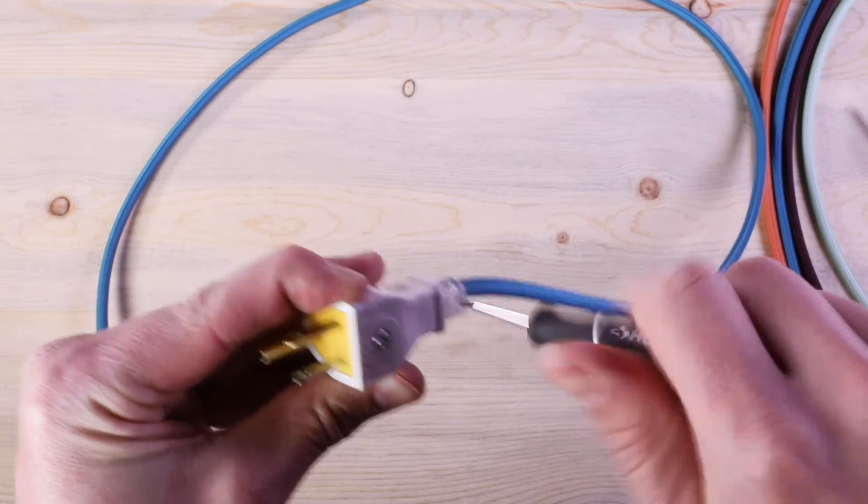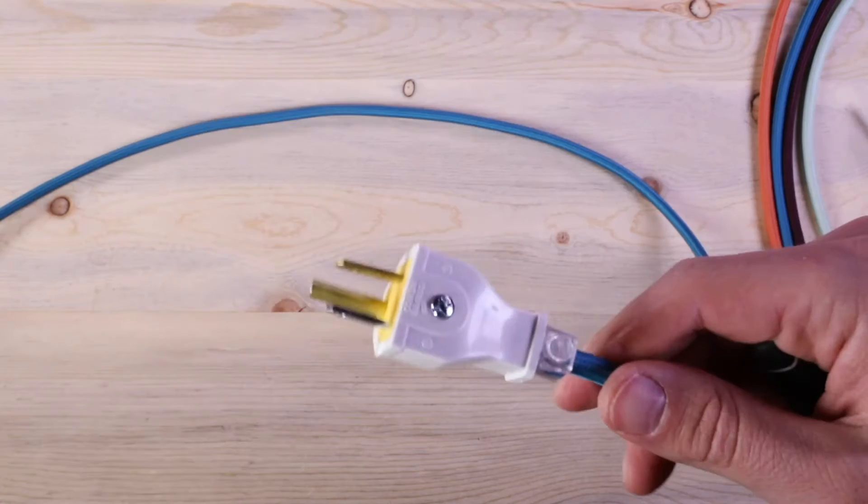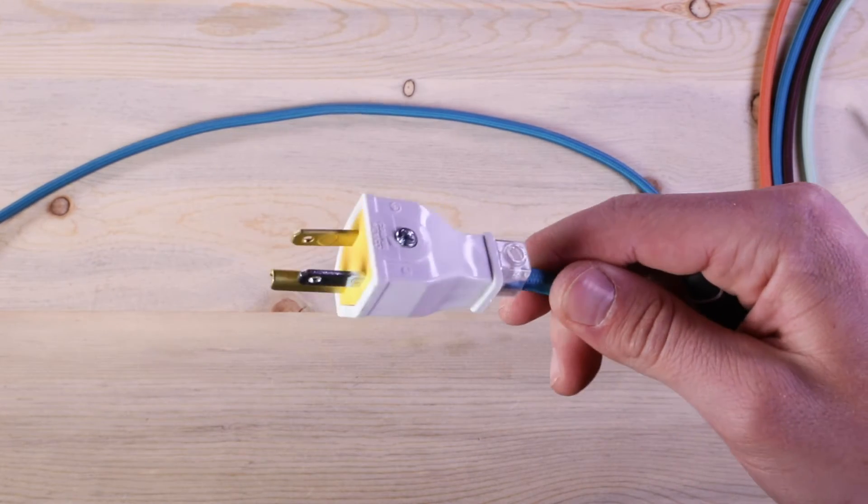Screw down the set screw and voila! You just wired a cord plug-in. Now go show those wall outlets that you ain't messing around no more.